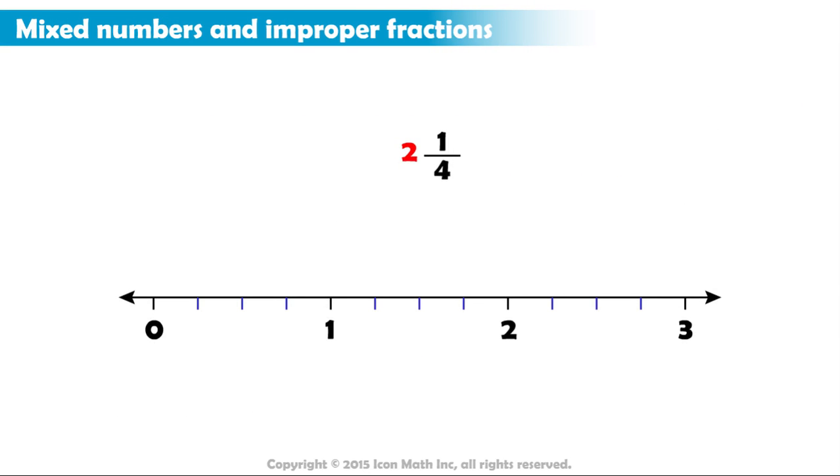Take the mixed number two and one-fourth. Remember that the mixed number two and one-fourth is actually two plus one-fourth. And two here represents two wholes, each made up of four parts, because the denominator we have equals four.